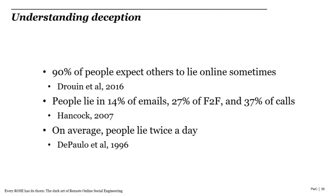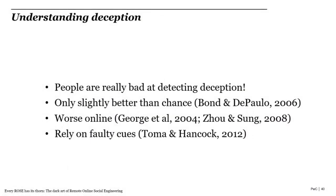To prevent and detect ROSE attacks, it's necessary to understand how deception works. We lie all the time — everyone lies to each other every day. We expect others to lie as well. But despite that, research shows we're actually really bad at detecting it. Most people have only a slightly better than chance ability to know when someone else is lying, and that's even worse when it comes to online deception. We rely on faulty cues — potentially because of bad crime dramas — thinking certain cues indicate lying when in fact they don't. This is even the case with people who do this for a living: police officers are not any better at detecting deception than the average person.